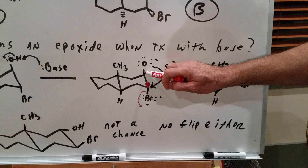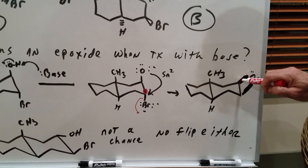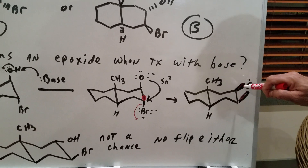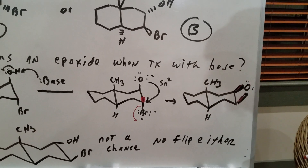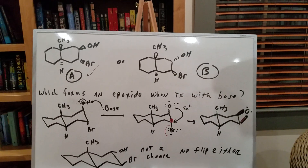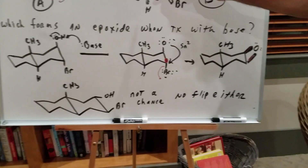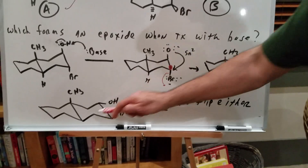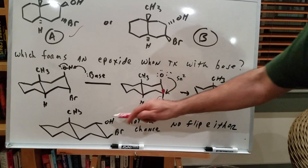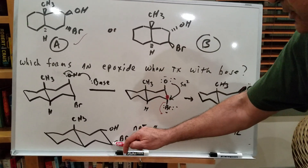We're going to do an SN2, and I showed you the orbital we're attacking — from the backside is the antibonding orbital of the carbon-to-bromine bond. As you can see, we do the backside attack, both groups are positioned properly. This group will move out, and when this group moves out you would form the epoxide. Notice how it's coming in — this is coming up, so this is still up, and obviously if you're forming the new bond this is up. So we're going to form the epoxide for A.